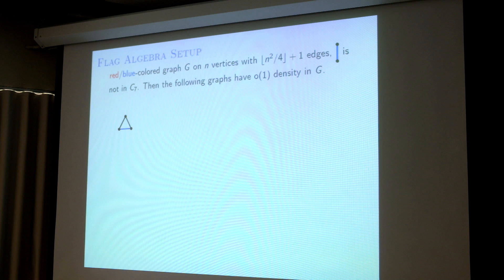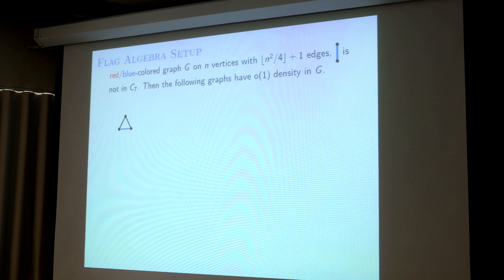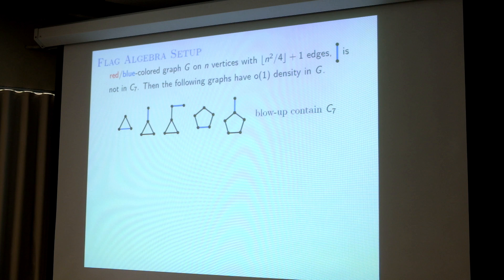For example, you cannot have a triangle with a blue edge. Simply because if G has a positive density of such structure, then it will have a blow-up of this structure, and the blow-up of this triangle will contain a C7 with a blue edge. So this structure must have little-o density, or zero density in the limit sense. The same holds for similar structures: if the blow-up of a structure contains C7, then it has little-o density in G. Here the black edge means I don't care about the color.